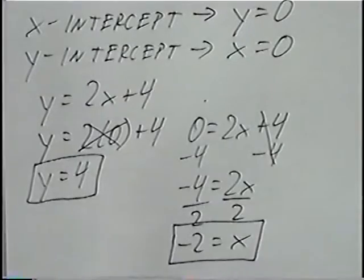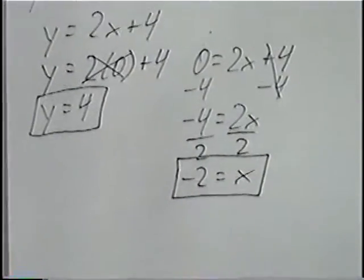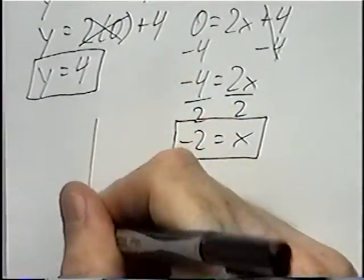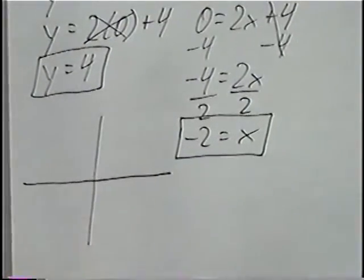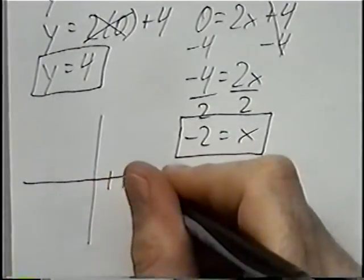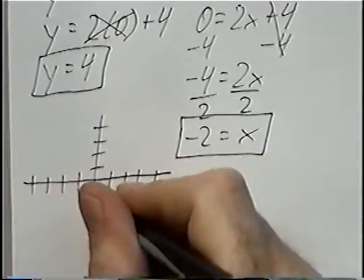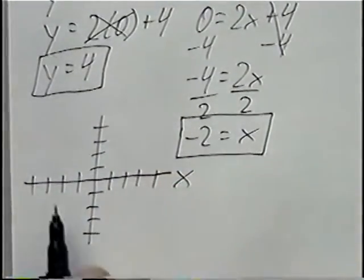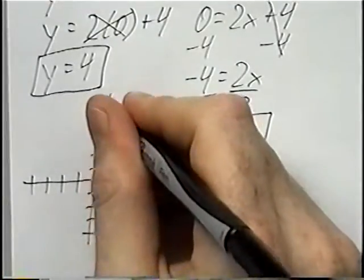So to find the intercepts: plug zero for x to get the y-intercept, and plug zero for y to get the x-intercept. Once you have the two intercepts, draw the x-y graph. The biggest number we have is four, so we can go four spots in each direction. You can label the x-axis, which goes left and right, and the y-axis, which is vertical.